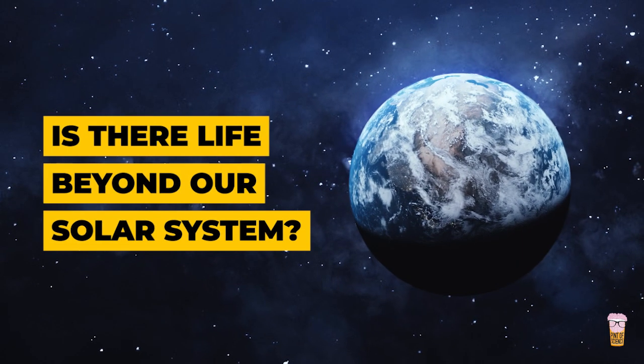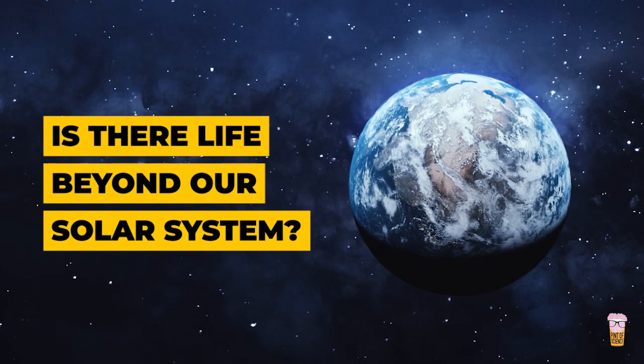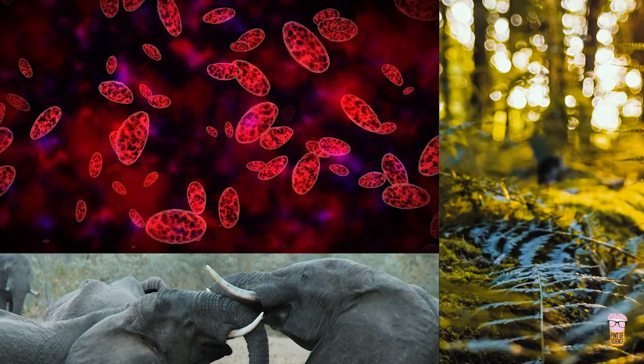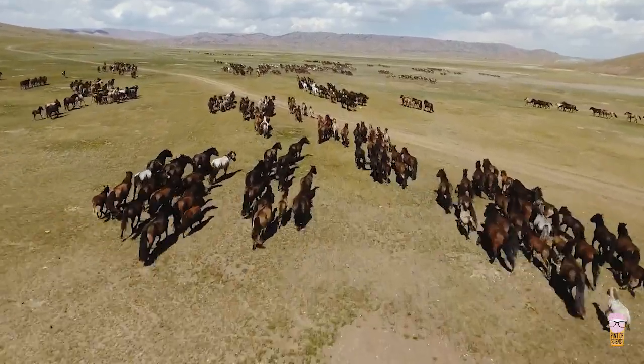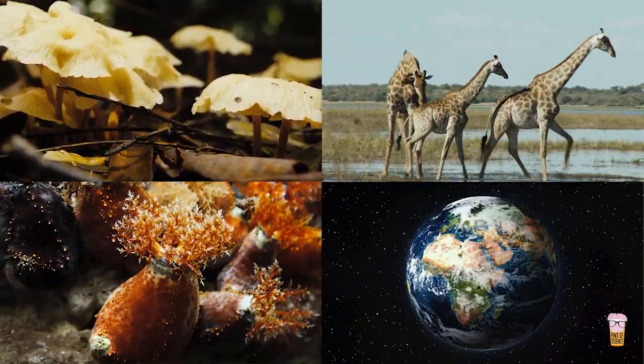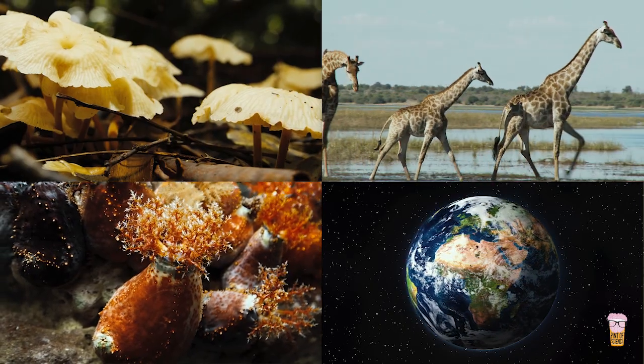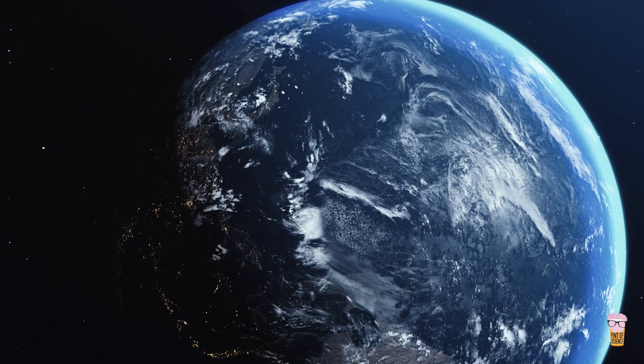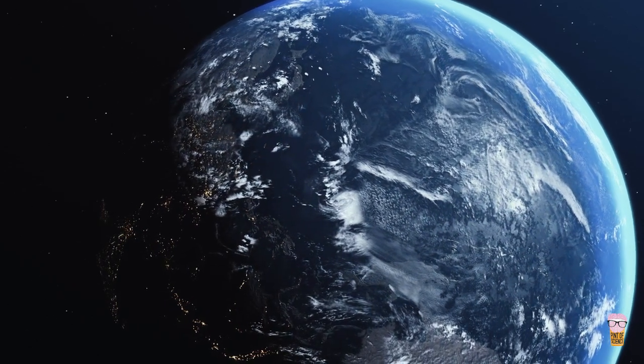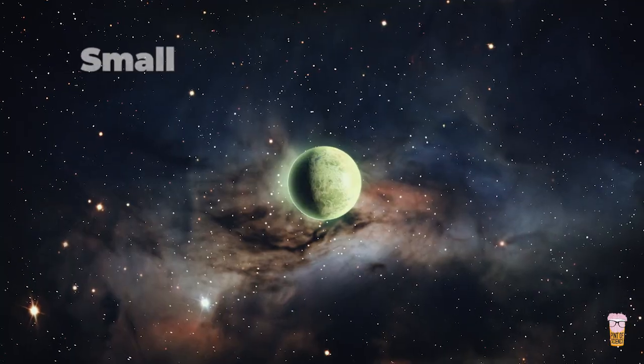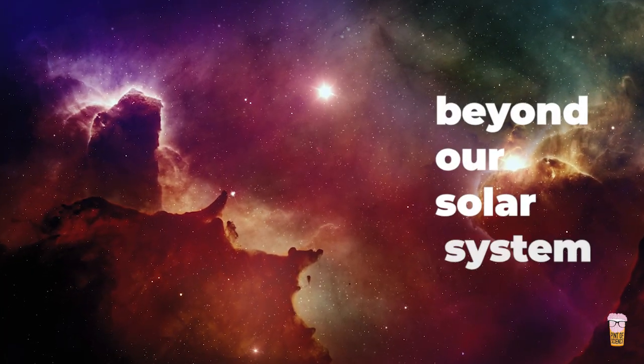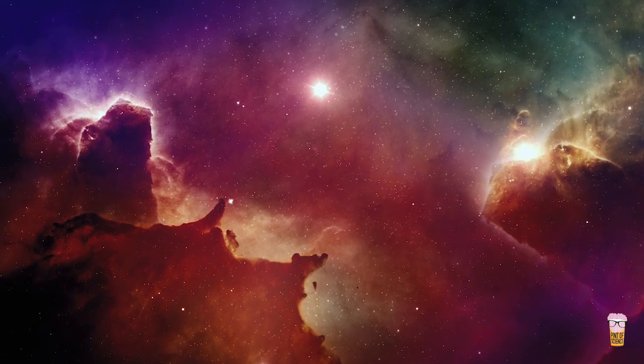So here on planet Earth, life comes in many different shapes and sizes, from the smallest bacteria to the largest plants and animals. But in this long list of known living organisms here on Earth, all of them have something in common. They require water to maintain their biology. Since more than two-thirds of the Earth's surface is covered by oceans, small rocky planets with large oceans beyond our solar system are very good places to search for alien life.